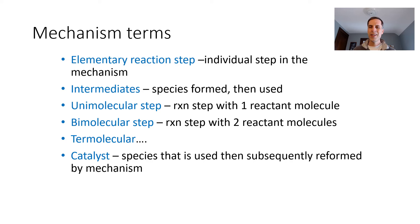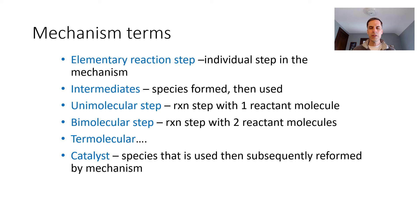There are a few terminology pieces to cover. Elementary reaction steps are the individual steps drawn out for the mechanism, and when added up they equal the overall reaction. Intermediates are species formed during the reaction but then used up. Steps can be unimolecular, bimolecular, or termolecular, depending on how many molecules collide. Unimolecular and bimolecular are most common; termolecular is less common, and you almost never see anything above that. Catalysts are species used in a reaction and then subsequently reformed.